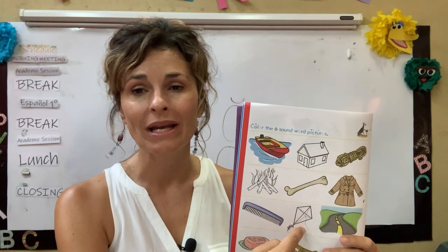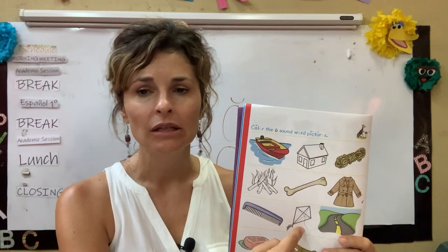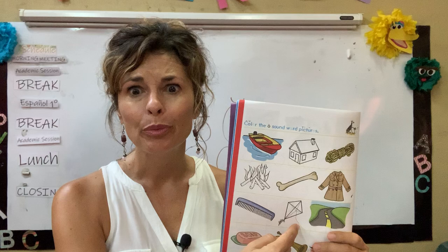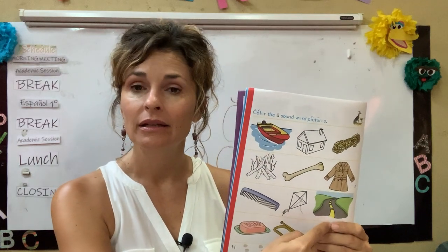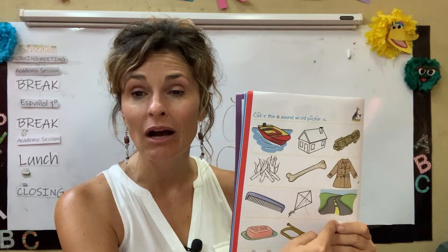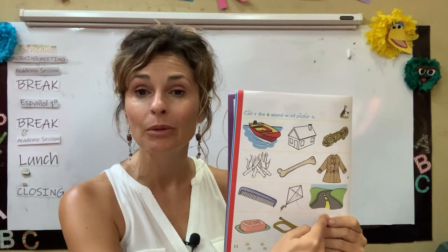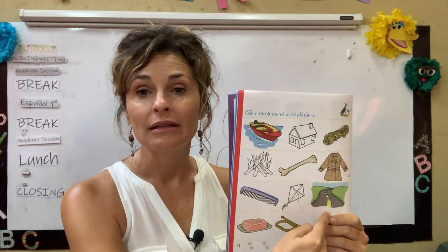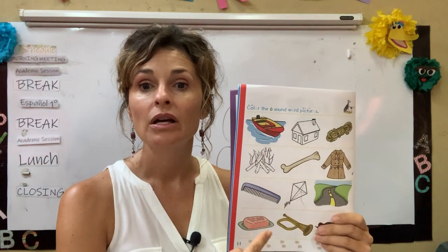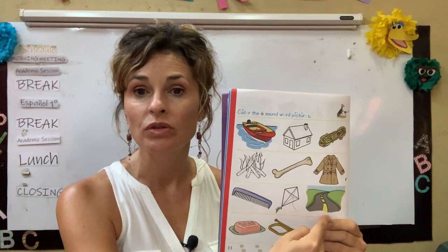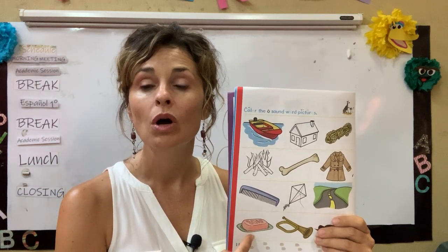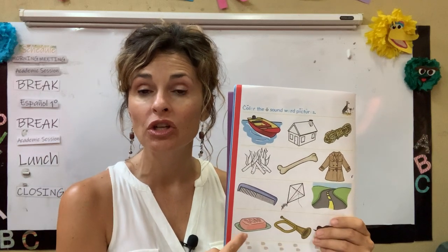Next, I say 'kite' — when I say kite, cuando yo pronuncio kite, yo no escucho el sonido O, y por eso yo no voy a pintar el kite. I'm not going to color the kite because I don't hear the O sound. But when you say these words at home — boys and girls, I want you to be practicing out loud in a loud voice — 'road,' 'soap.' When I say road and soap, I do hear the O sound. So I should color road and soap.